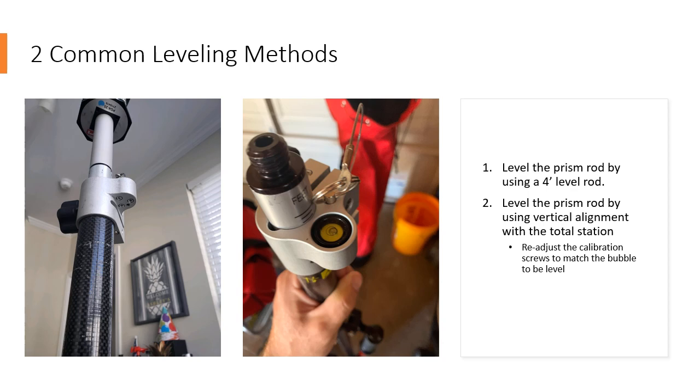So to calibrate the prism rod, we have two methods that I use fairly often. The first one is if I'm not able to use my total station, where I basically take the four-foot level rods that I can find on my job site, and I put them on the prism rod, and I level it manually.